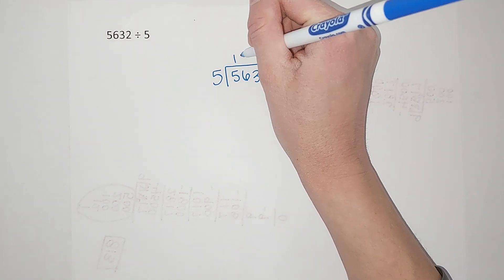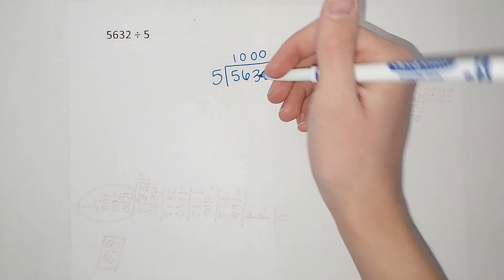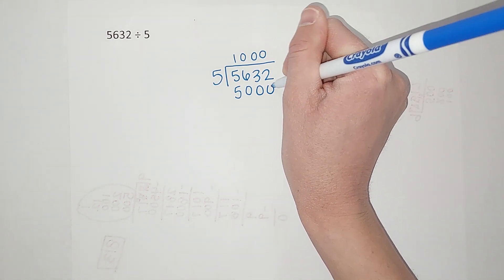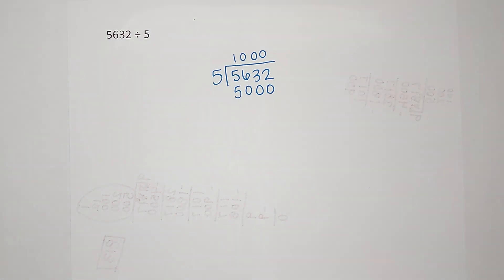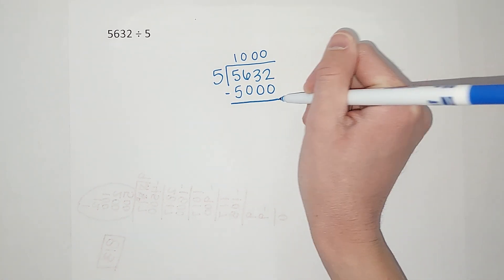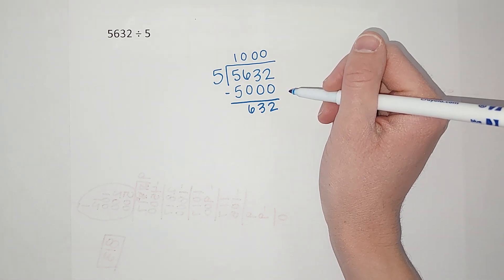So I'm going to write a thousand up here. A thousand times 5 gives me 5,000. This is like I'm taking a thousand fives out of this group and seeing what I'm left with. What I still need to divide. So when I subtract that I get 632.